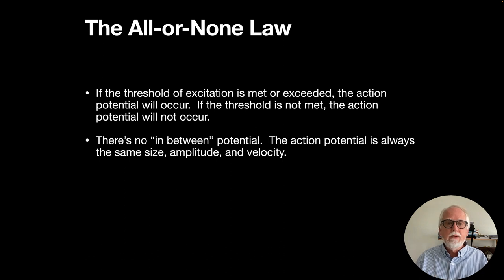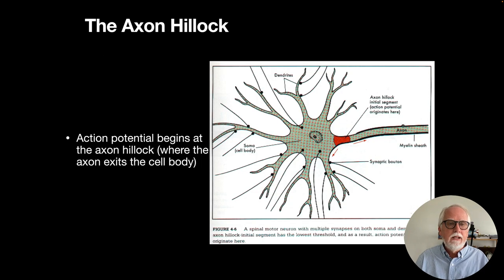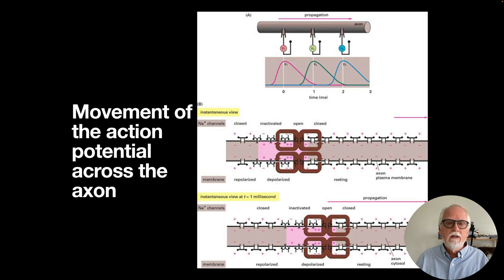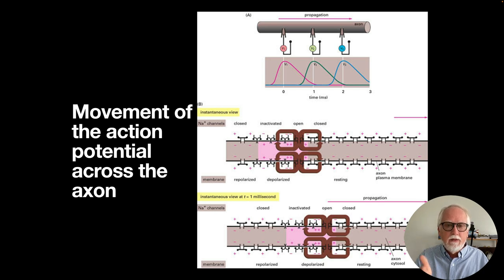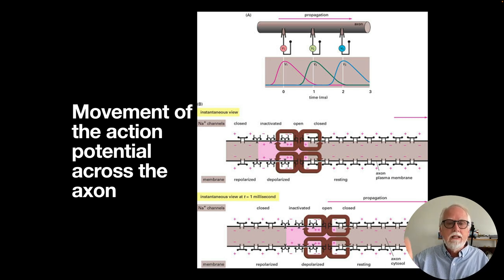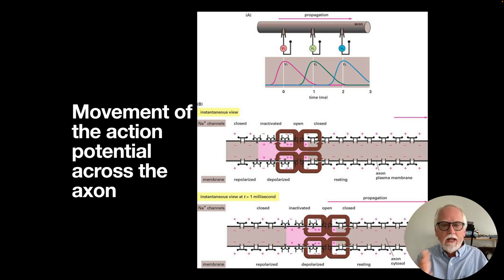There's no in-between potential — the action potential is always the same size, amplitude, and velocity. It begins at the axon hillock, where the sodium and potassium gates change, and then propagates: as it starts, the neighboring part of the membrane opens and closes its gates, then the next part, and so on all the way down the axon — a continuous cycle of sodium and potassium moving in and out, causing depolarization and repolarization.